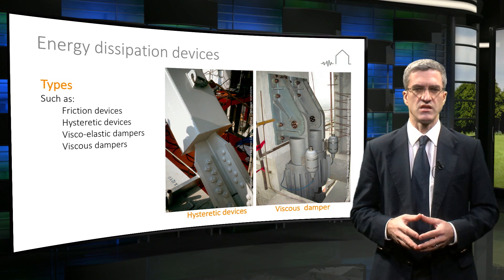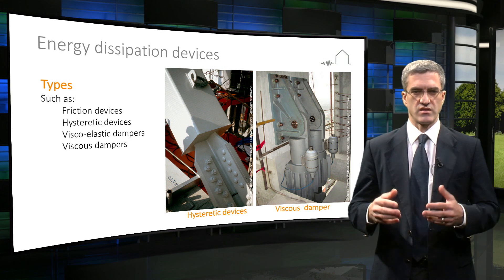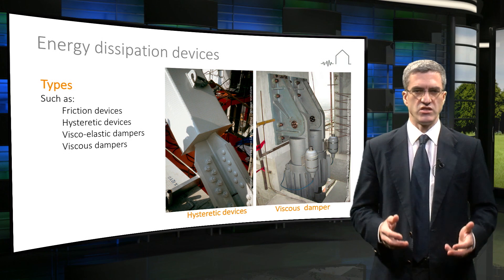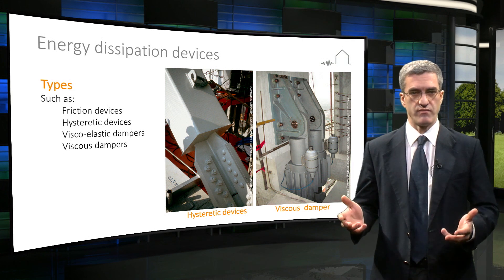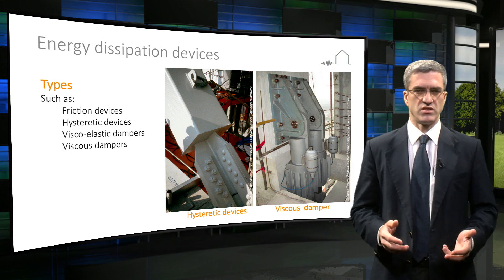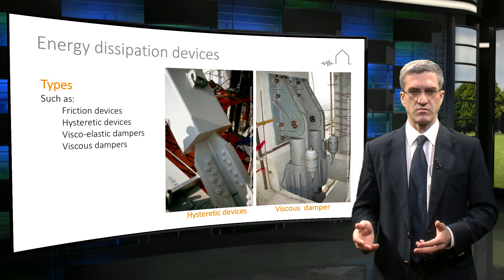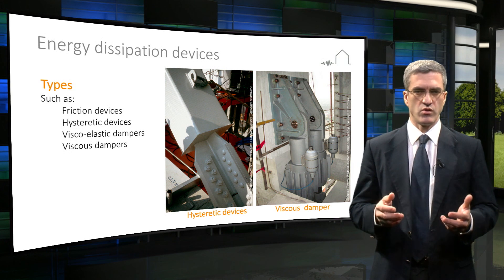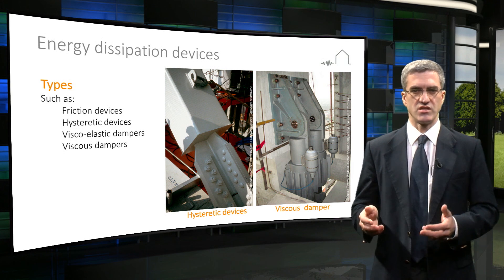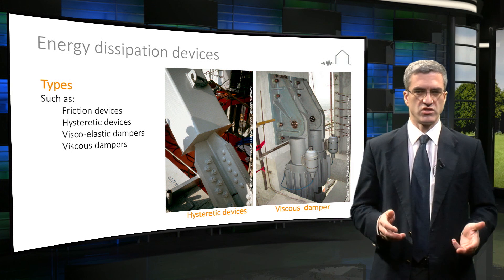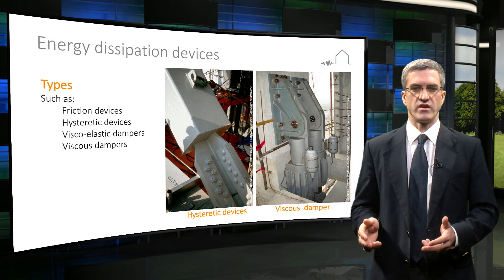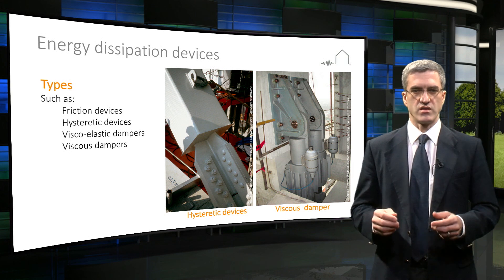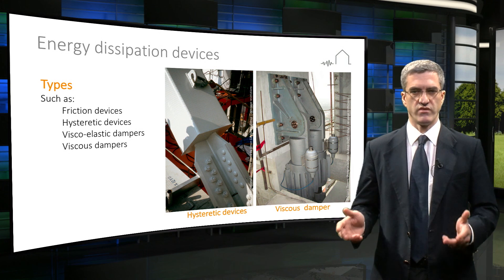These devices follow the philosophy that the seismic displacement demand on a structure is lower if its energy dissipation ability is higher. Therefore, high energy dissipation needs a lower displacement target which can be met more economically. You also have better control over where damage is likely to occur. Friction devices, hysteretic devices, viscoelastic and viscous dampers are examples of energy dissipation devices.